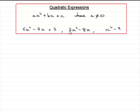Now when we factorize any expression, I've always been trying to encourage you to always look for common factors. And in this kind of quadratic expression, we have a common factor x. But what about this one here, x squared minus 9 — it has no common factor.